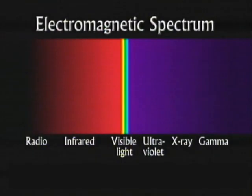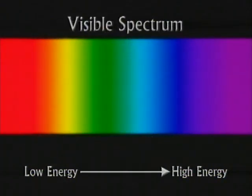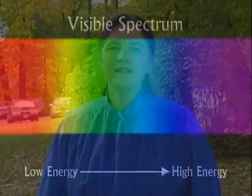The electromagnetic spectrum ranges from low-energy photons to high-energy photons. Humans and other animals are able to see the visible light region of the spectrum. But even within the visible light region, the photons do not all have the same energy. It is the differences in the energy of photons in visible light that lets us see color. Let's look back to the 1600s and see how our understanding of color has developed.